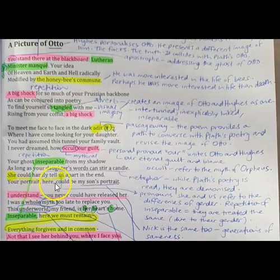Then the next line's an interesting one. Your portrait here could be my son's portrait. So saying that not only are Otto and Ted similar, but Nick is as well. The image of you in your photo could be the same as Nick, that they're physically very similar. So that suggests that he too is just like the father and the grandfather.